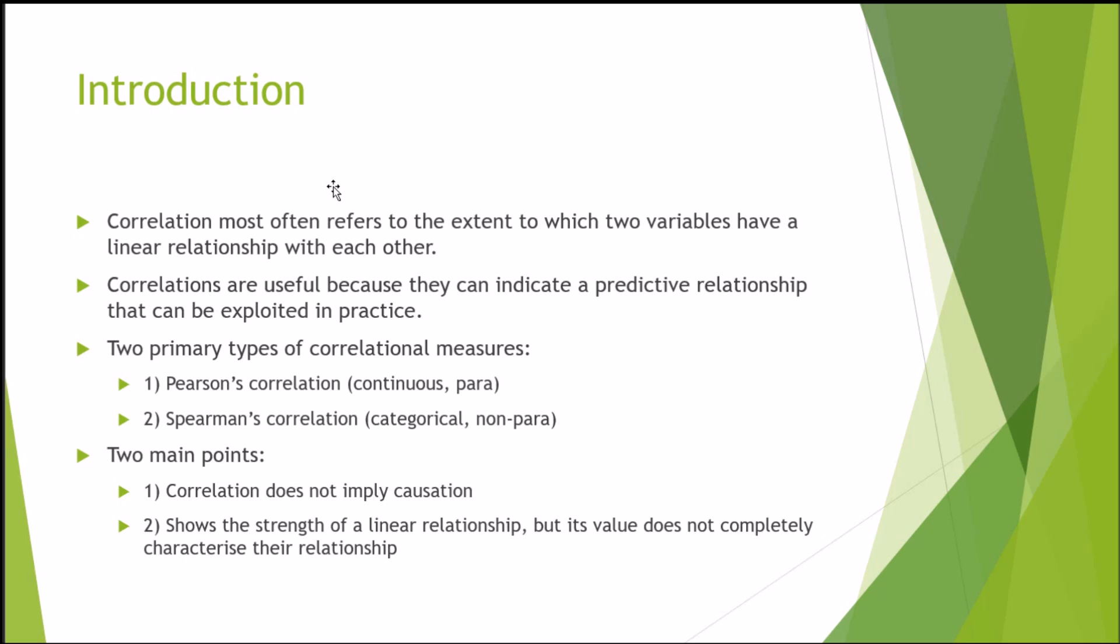Secondly, correlation shows the strength of a linear relationship, but its value does not completely characterize their relationship, which again goes back to point one of not implying causation. A correlation is a type of primary statistic that you can then go on to do further analysis on, such as regression.